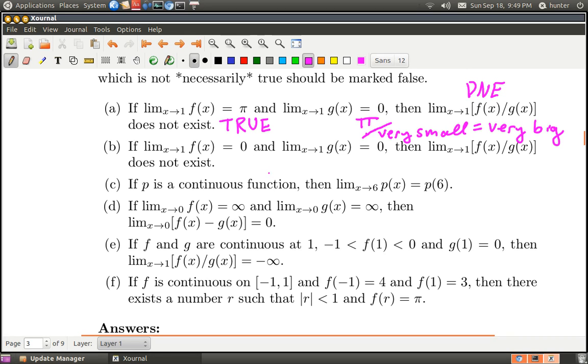Let's look at B. It says if the limit as x goes to 1 of f(x) is 0 and g(x) also goes to 0, then the limit of f(x)/g(x) does not exist. The answer is false. Your brain might tell you it's true because 0 over 0 is nonsense, so maybe if two things go to 0 you always get something undefined.